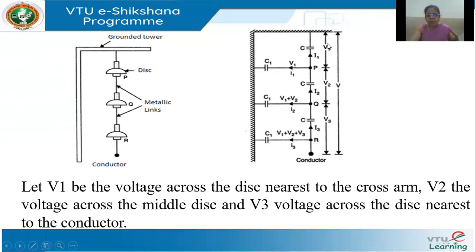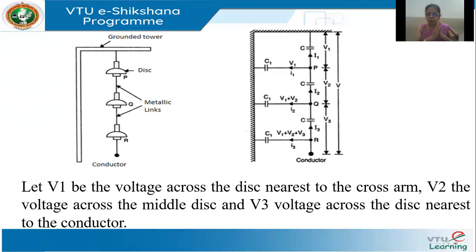I have taken only three disks for simplicity — whatever we discuss can easily be extended to more disks. Let V1 be the voltage of the disk nearest to the cross arm and V3 be the voltage of the disk nearest to the conductor. With these notations, we will derive the relationship between V1, V2, and V3. The total voltage V across the entire string will be V1 plus V2 plus V3. I am going to use only simple KCL — Kirchhoff's current law — applied at junctions P and Q.